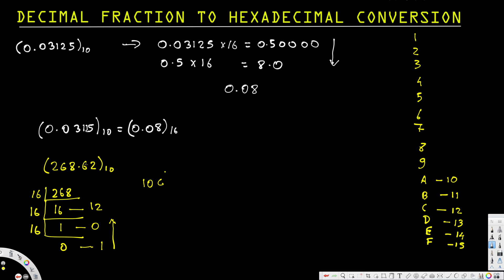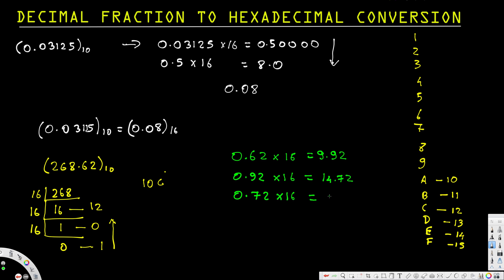Now for the fraction part 0.62, we convert to hexadecimal by multiplying until the fraction equals 0 or we have enough digits. 0.62 times 16 gives 9.92. Then 0.92 times 16 gives 14.72. Then 0.72 times 16 gives 11.52.